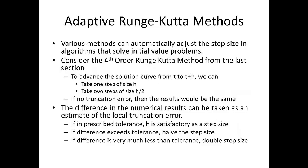So, this leads us to adaptive Runge-Kutta methods, and various methods can automatically adjust the step size in algorithms that solve initial value problems. Consider the fourth order Runge-Kutta method from the last section. To advance the solution curve from T to T plus H, we can take one step of size H, or take two steps of size H over 2. If we don't have any truncation error, then the results will essentially be the same. The difference in the numerical results can be taken as an estimate of the local truncation error. If this difference is in a prescribed tolerance, then H is satisfactory as the step size. If the difference exceeds the tolerance, we halve the step size, and if the difference is very much less than the tolerance, we double the step size. The procedure just outlined is pretty easily programmed, but it can be a bit wasteful of computing time and is generally not recommended.